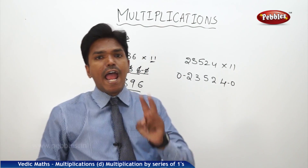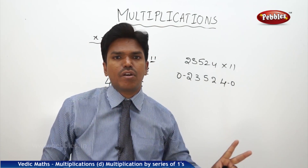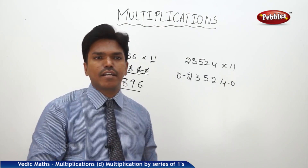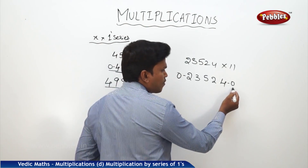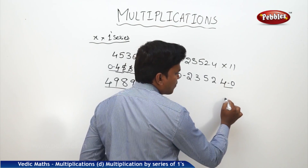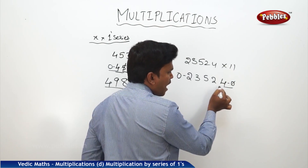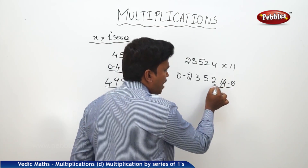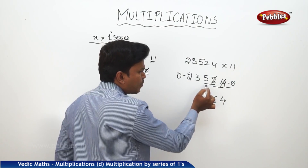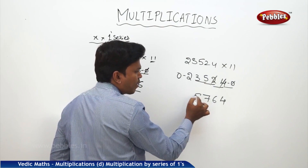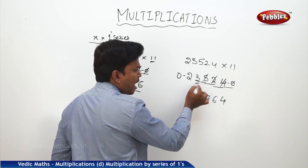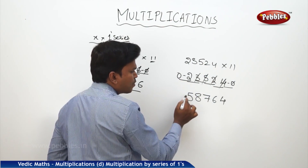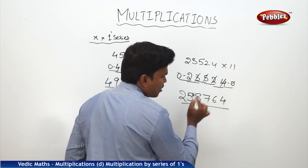Now, since there are 2 ones, add maximum 2 digits at a time from the right side. First: 0 plus 4 = 4. Leave the zero, next 2 digits: 2 plus 4 = 6. Leave the 4, add next 2 digits: 5 plus 2 = 7. Then 3 plus 5 = 8. Then 2 plus 3 = 5. Finally 0 plus 2 = 2. This will be your answer.